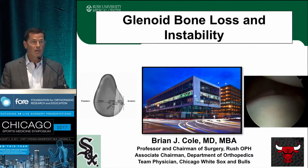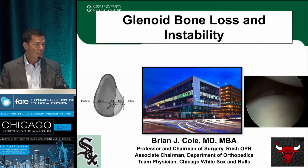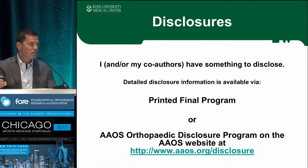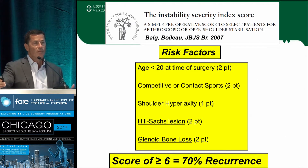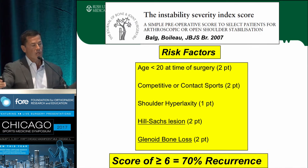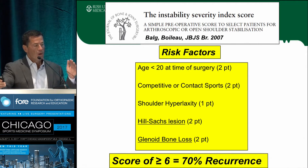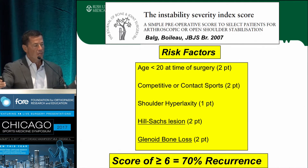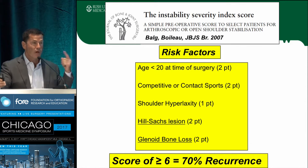This has been a very hot topic, partially because we've learned a lot over the last couple of years from what the Europeans have taught us and their outcomes, as well as new techniques described here in the United States. One of the biggest challenges is when we try to predict who's going to recur. As soon as you add bone loss into the equation and start adding up the numbers for the instability severity index, which is essentially a 10-point scale, all you have to do is have a Hill-Sacks lesion, glenoid bone loss, and be less than 20, and you have a greater than 70% recurrence rate. So it doesn't take much, and that's why this is on our radar.